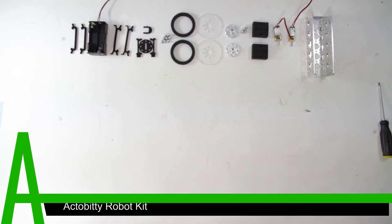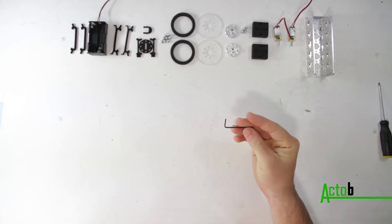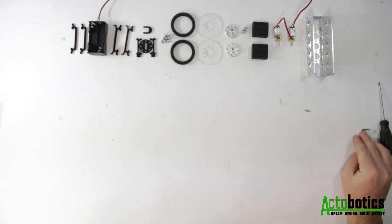Today we are building the Actobity two wheel robot kit. For this project you will need a 1/16th hex key as well as a 7/64th hex key, both of which are included in the kit.